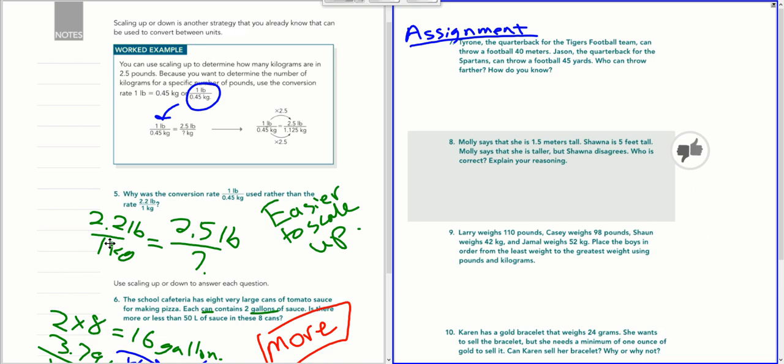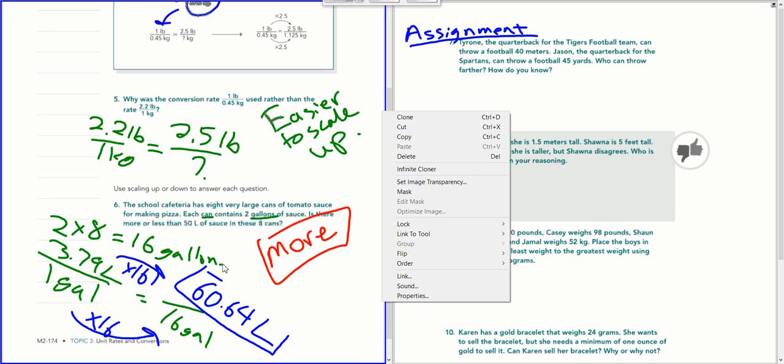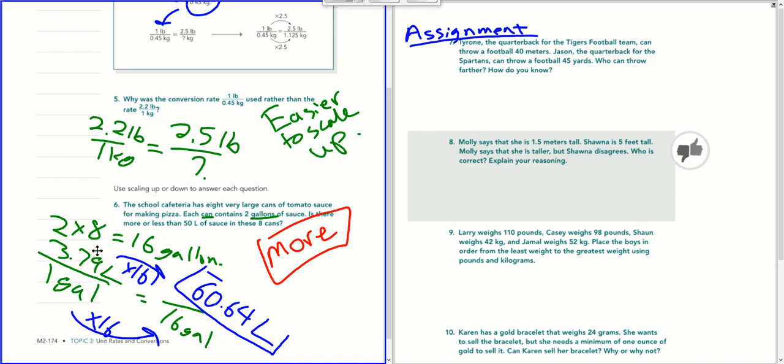Now, to go from gallons to liters, I had to convert using this equation right here, that one gallon is the same as 3.79 liters. So I put a gallon on the bottom and 3.79 liters on top. I could have done it the other way. That's fine.